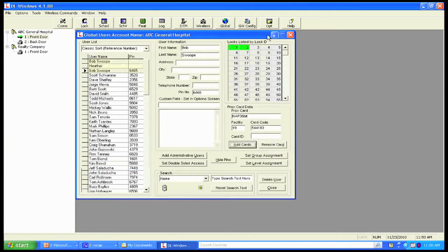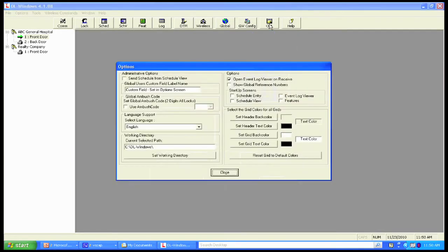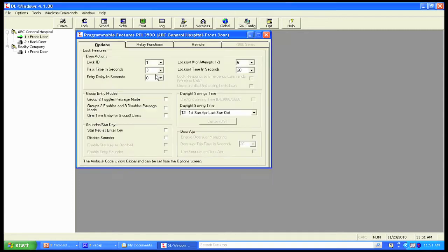That pretty much wraps up the Feature Screen. The Options Screen is right here. And what we're going to do here is this is just where you can set different types of options where we can set the screens from the Custom Field. We can use an Ambush Code. Ambush Code simply means that if I hit two digits prior to my code, I'm going to get a silent alarm if I've wired that. In the Options Screen, the three tabs pretty much shows you in the standalone series what options and screens are available.